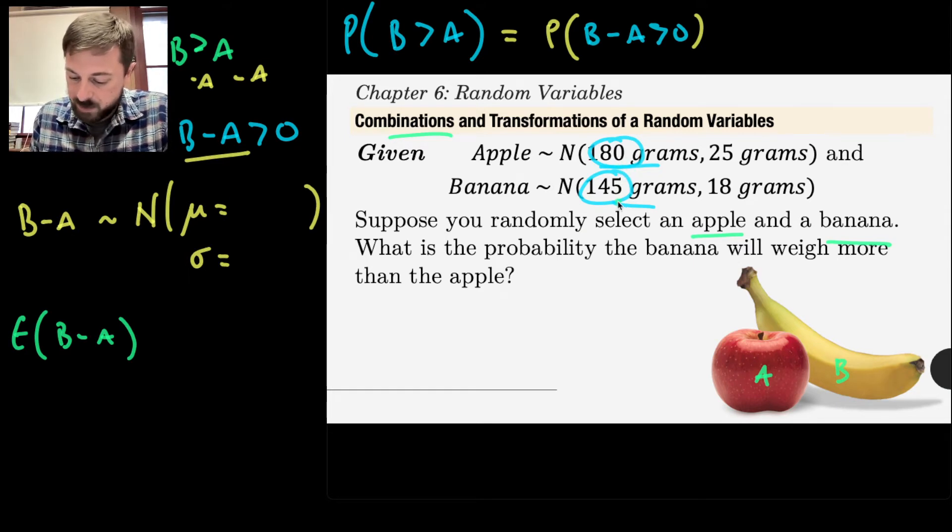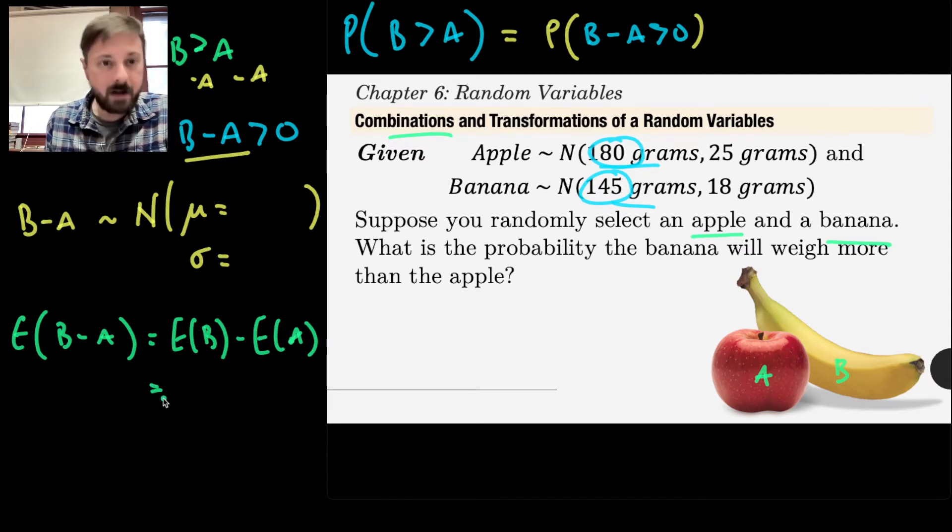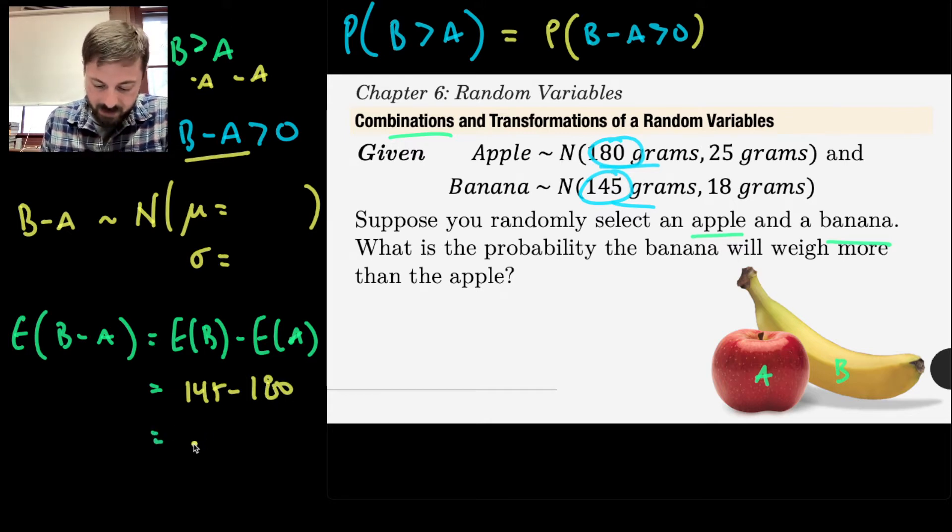Let's start by thinking about the expected value. What would be the expected value of B minus A? What would you expect to be the difference between just some randomly selected apple and some randomly selected banana? Since apples are 180 grams and bananas are 145, I'd expect that the banana to be smaller than the apple. And on average, probably by whatever the difference is between these things.